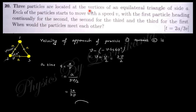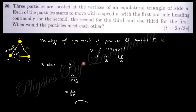The last question: three particles are located at the vertices of an equilateral triangle of side a, each moving with speed v always directed toward the next particle. The component of particle two's velocity along the direction toward particle one is v·cos60°. The approach velocity of particle one toward two is v − (−v·cos60°) = v + v/2 = 3v/2. The time to meet is a divided by (3v/2), giving t = 2a/(3v).